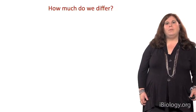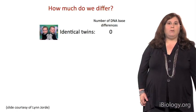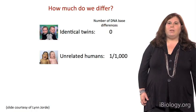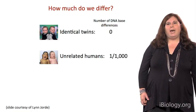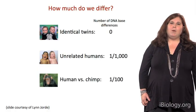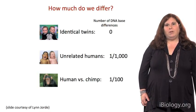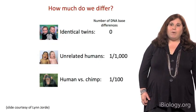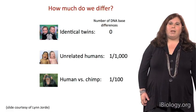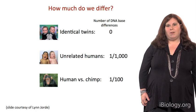How much do we differ? Identical twins have no differences at the nucleotide level. If we compare unrelated humans, we differ at about 1 out of 1,000 nucleotide sites. And if we compare humans to our closest genetic relative, the chimpanzee, we differ at about 1 out of 100 sites. As a whole, our species is very similar, and that simply reflects our recent common ancestry from Africa within the past 100,000 years.